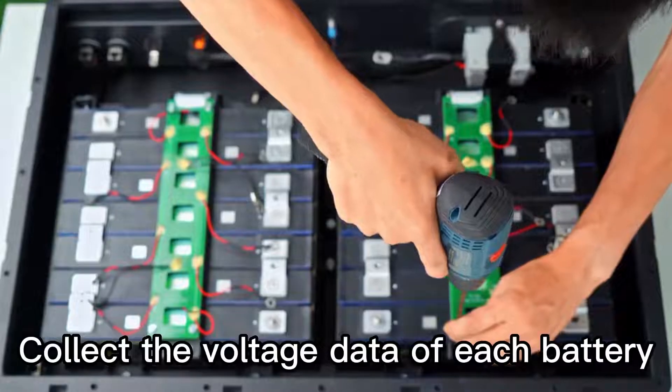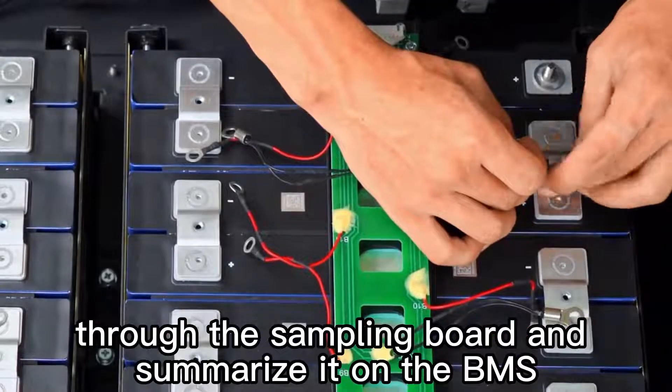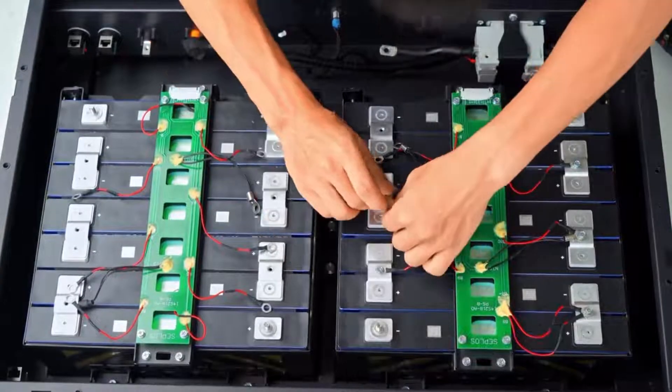Collect the voltage data of each battery through the sampling board end, summarize it on the BMS. Lock sample lines.